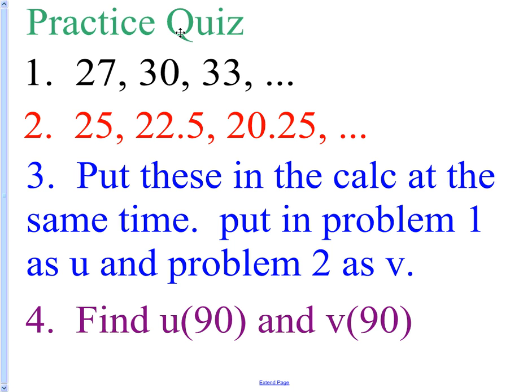All right, on the first one and two, all I want you to do is write out the formula in normal sequence notation. U sub 1 equals 27, U sub n is equal to blah, blah, blah. That's all you've got to do for one and two.